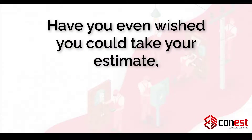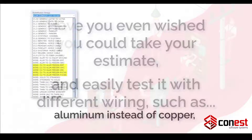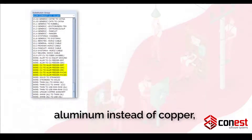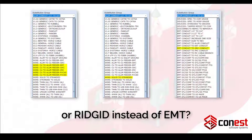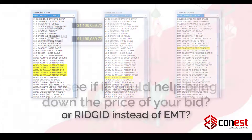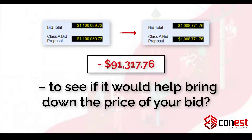Have you ever wished you could take your estimate and easily test it with different wiring, such as aluminum instead of copper, stranded instead of solid, or rigid instead of EMT, to see if it would help bring down the price of your bid?